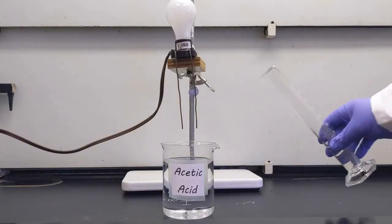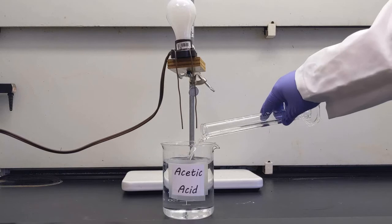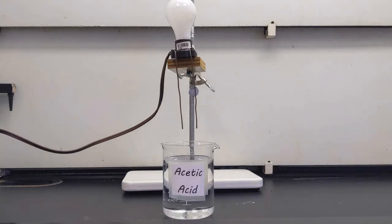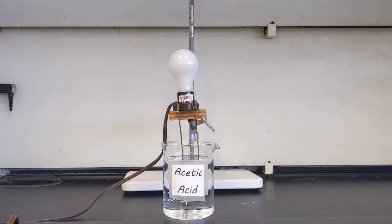Our third candidate is acetic acid. This is just vinegar. So we're going to pour it in. It's a liquid, so we don't need to worry about stirring it and dissolving it. As we lower the light bulb in here, now we can go plug it in. If the acetic acid lights up, it'll conduct. We see that the light bulb does not come on because acetic acid does not conduct.